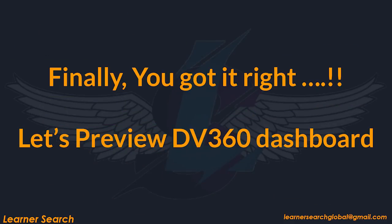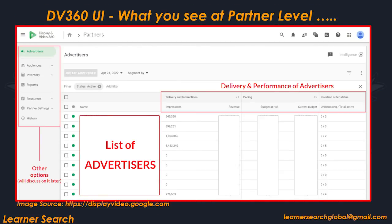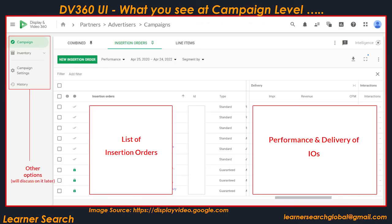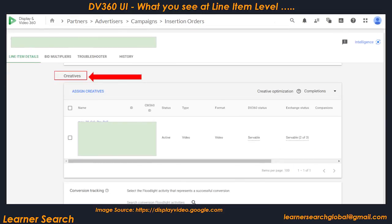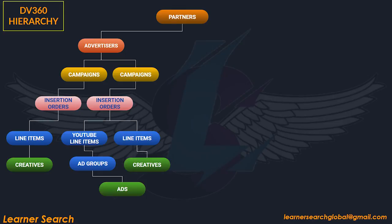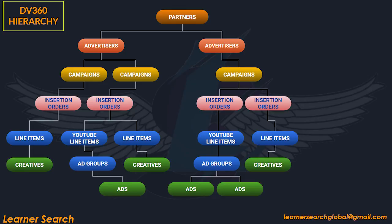Finally, let's preview the DV360 dashboard. The account holder can see multiple partners at the account level. Under each partner, multiple advertisers are created. Advertiser holds multiple campaigns, and campaign holds multiple IOs. IOs contain multiple line items, and each line item is assigned with creatives. Now let's practice a complex structure. Here you can see one partner having one advertiser, one campaign, IO, line item, and creative. Under this advertiser, there is another campaign with one IO and two line items, each having one creative. Under this partner, a new advertiser is created having one campaign, IO, YouTube line item with one ad group and two creatives. For the same campaign, a new IO is created having one line item and creative.